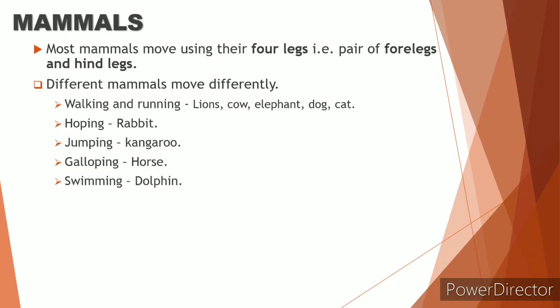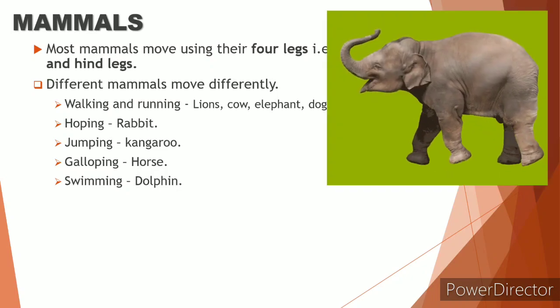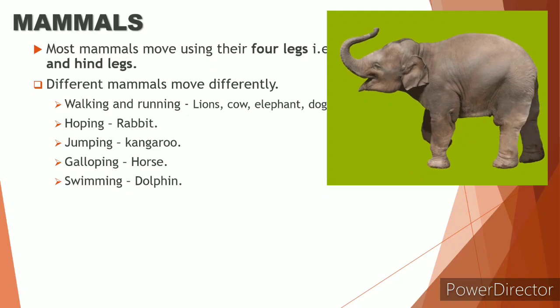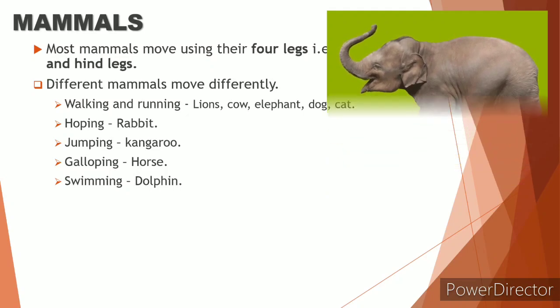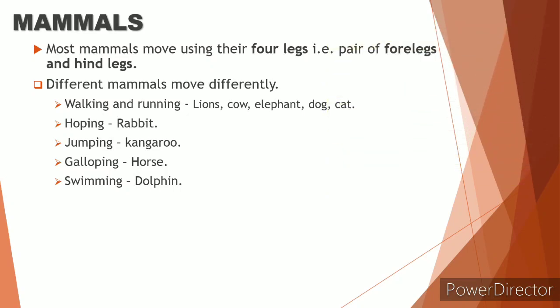Now coming to mammals — just see how many kinds of movements a mammal can do. They can walk, hop, jump, gallop, or swim, and the movement varies from animal to animal. Lion, cow, and elephant can walk; rabbit can hop; kangaroo can jump; horse can gallop; and dolphin can swim.